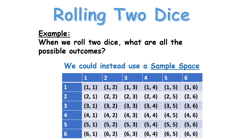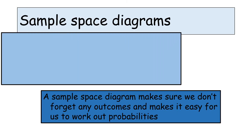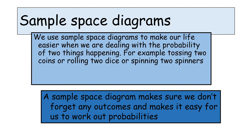In the first box here, I roll a one and a one. Here it means I roll a three and a two. Here I've rolled a five and a four. The table is 6 rows by 6 columns giving us 36 outcomes. Sample space diagrams make sure you don't forget any outcomes and make it easy to work out probabilities. In an exam situation, they'll give you the table and you just fill it in.